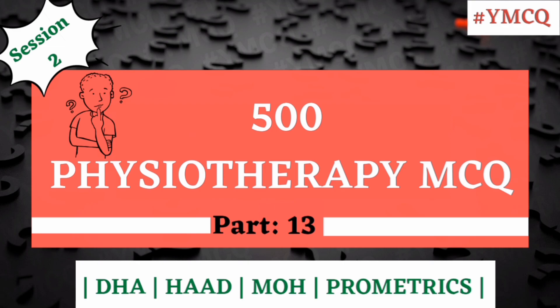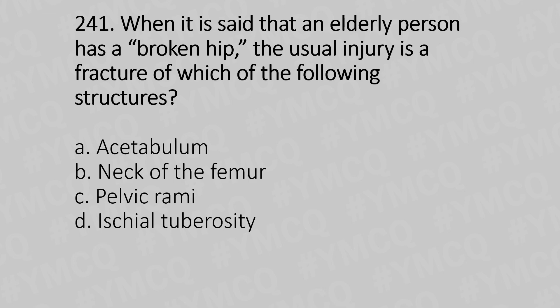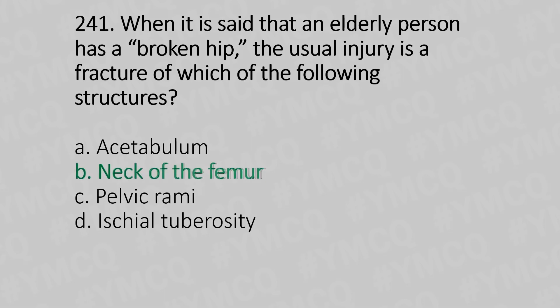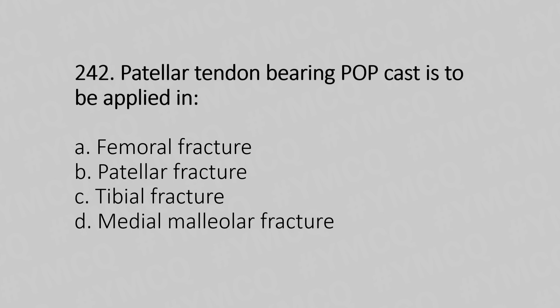Question 241: When it is said that an elderly person has a broken hip, the usual injury is a fracture of which structure? Option A: acetabulum. Option B: neck of the femur. Option C: pubic rami. Option D: ischial tuberosity. The answer is Option B, neck of the femur.